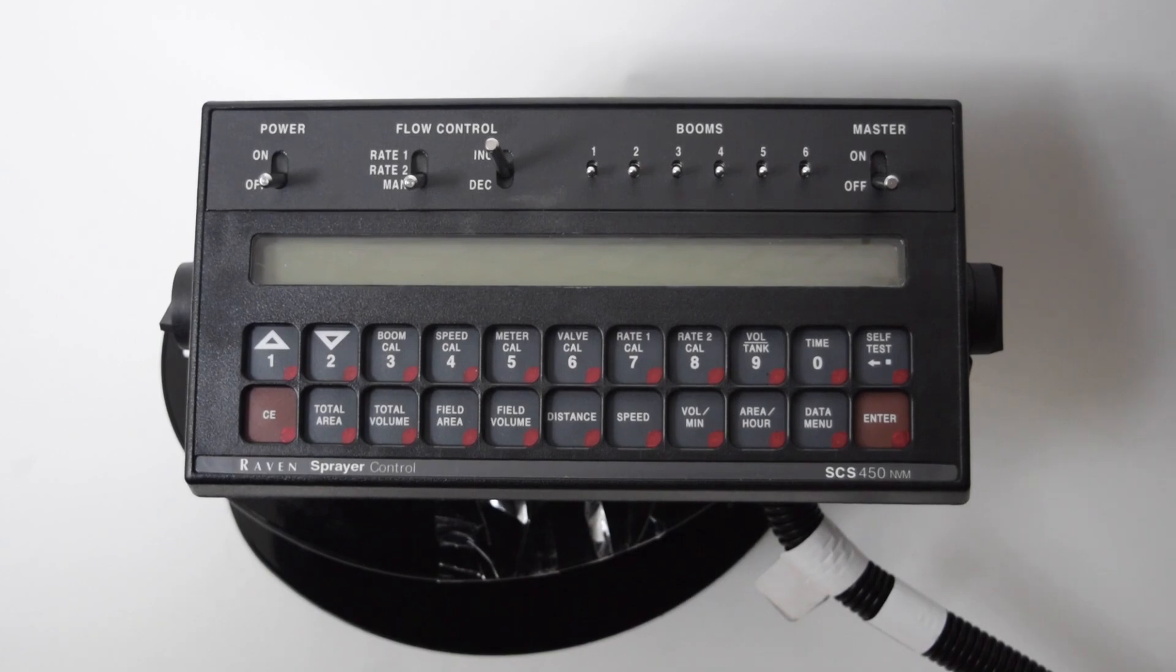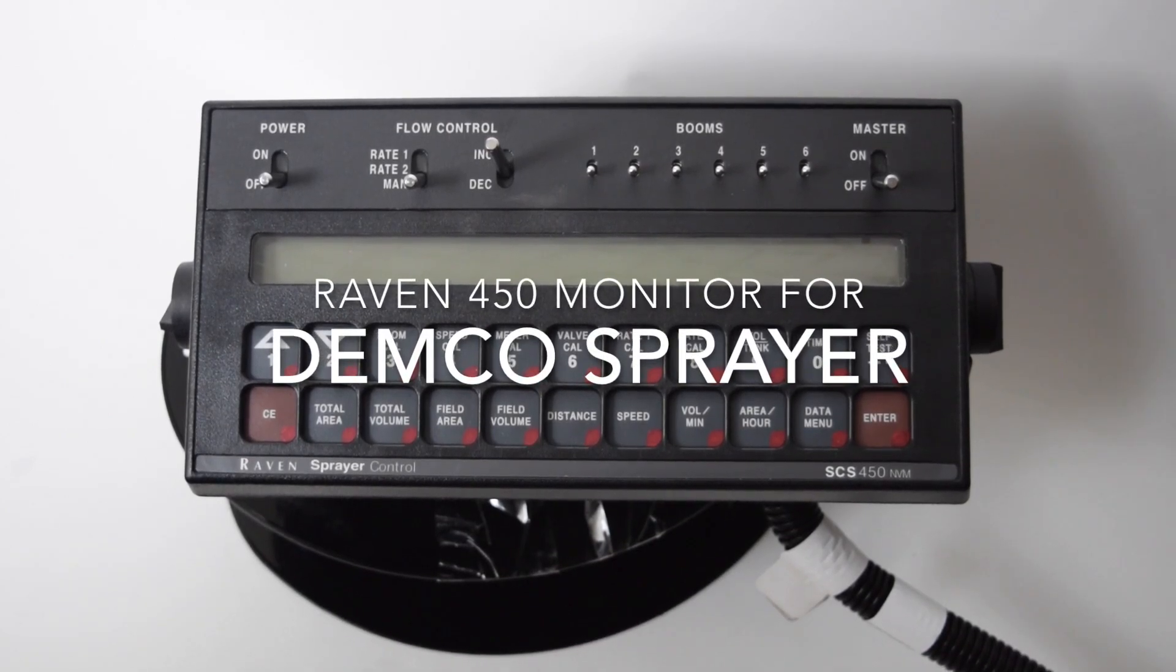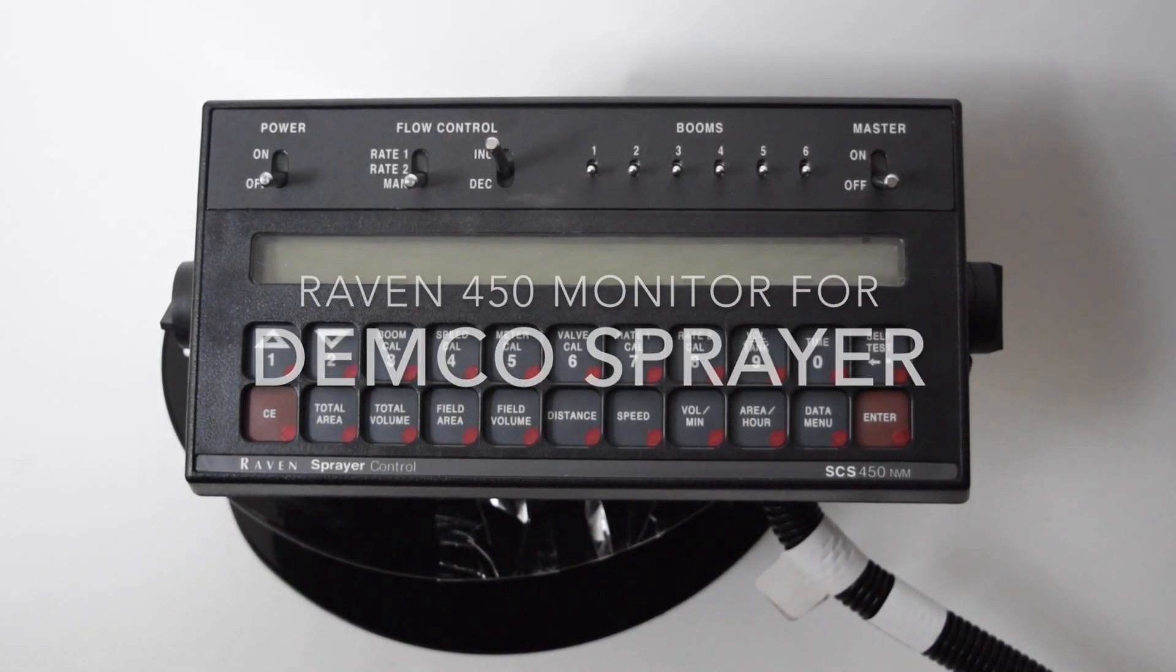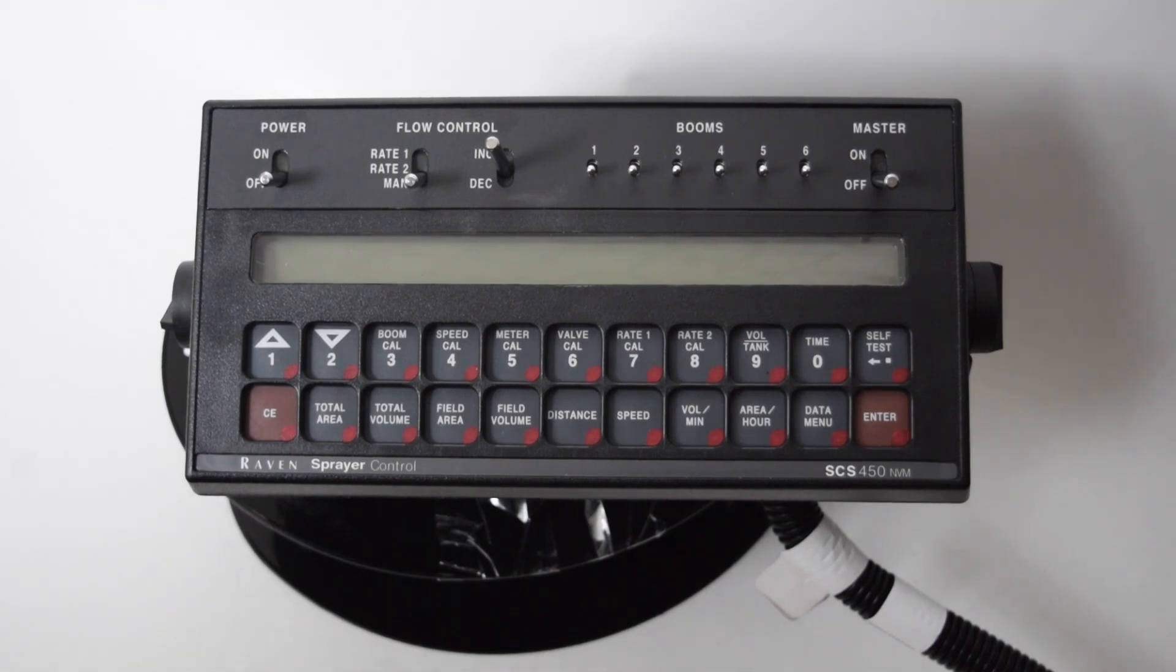For hooking up a Raven 450 monitor to a Demco sprayer, first thing is make sure you have a clean connection to your battery or your power source.